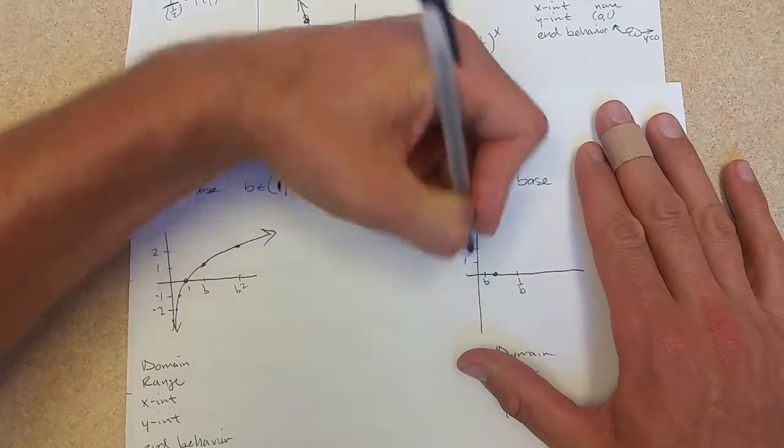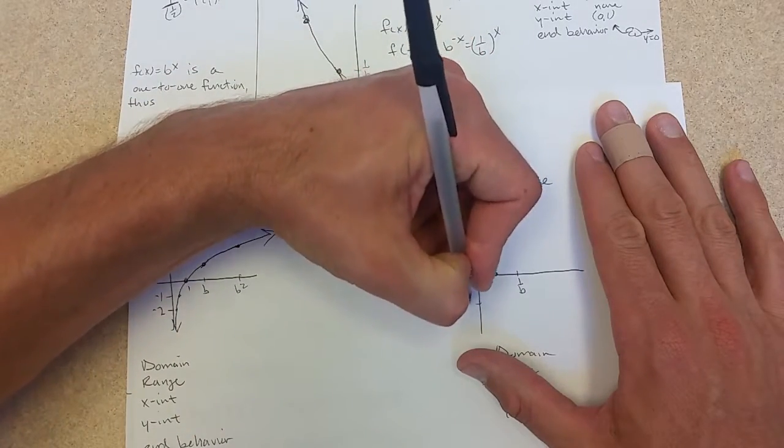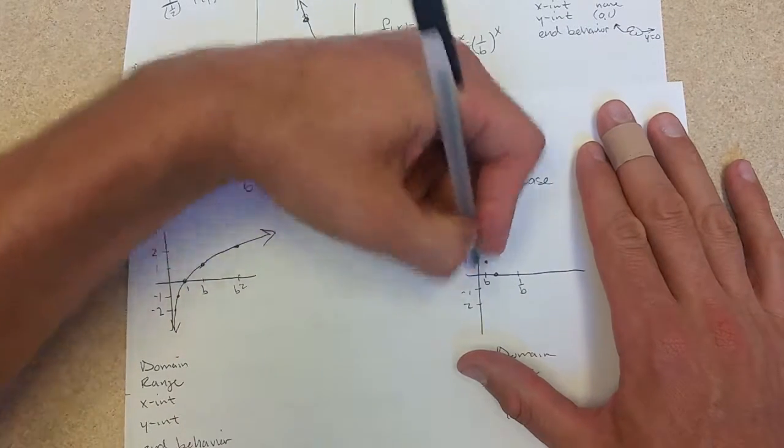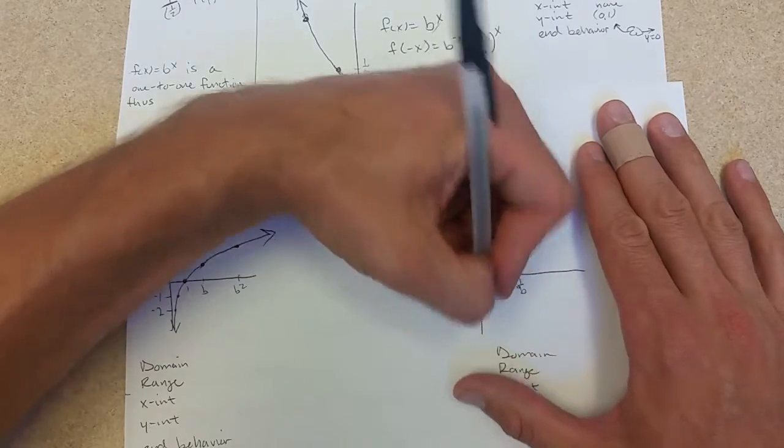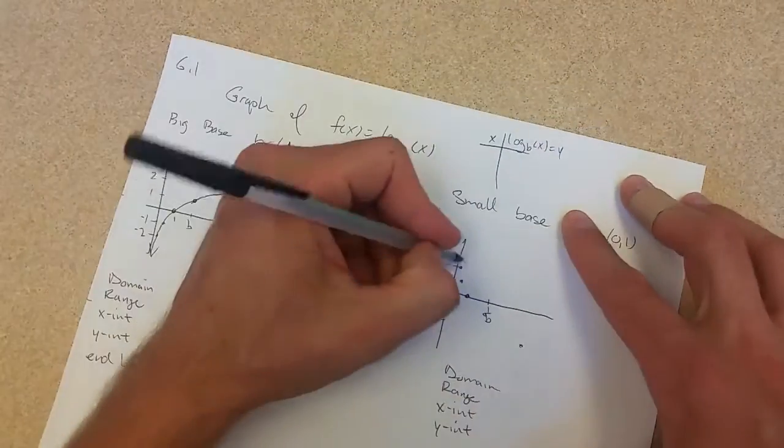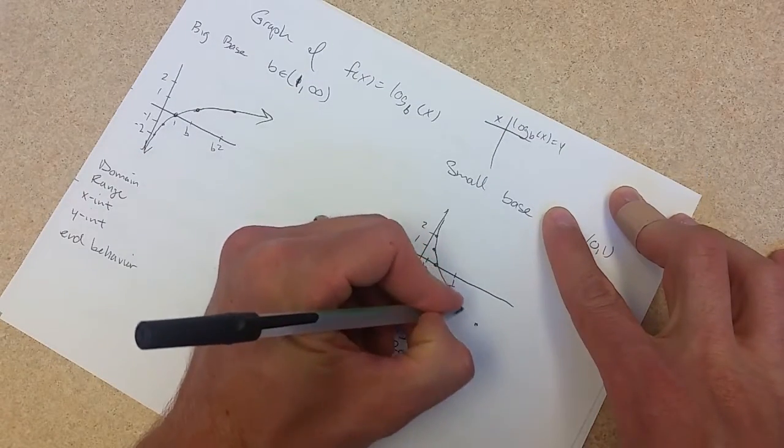One, two, and one over b squared we'll put out there, connect all these together, and we're going to have a vertical asymptote also.